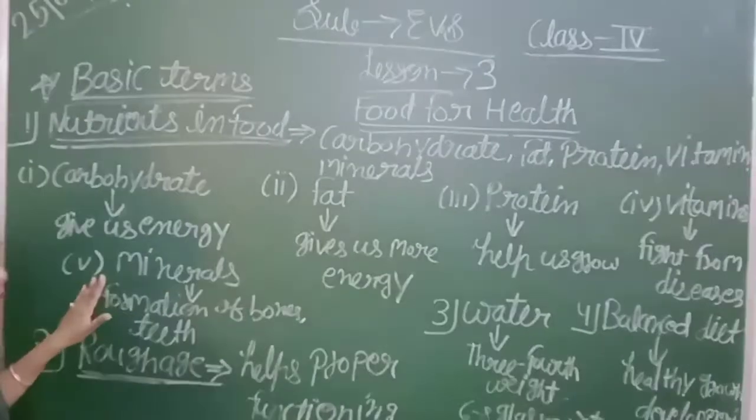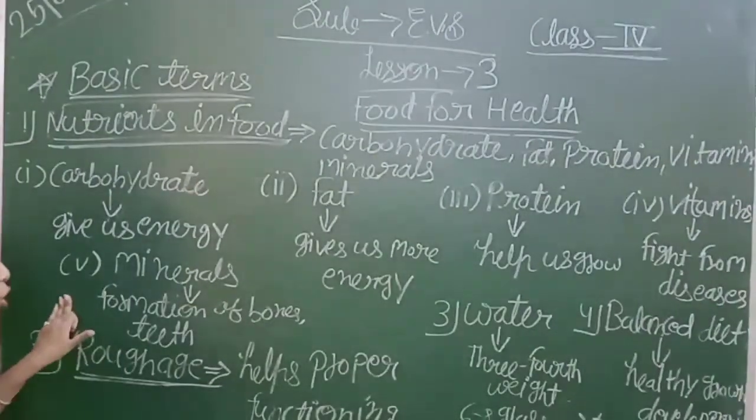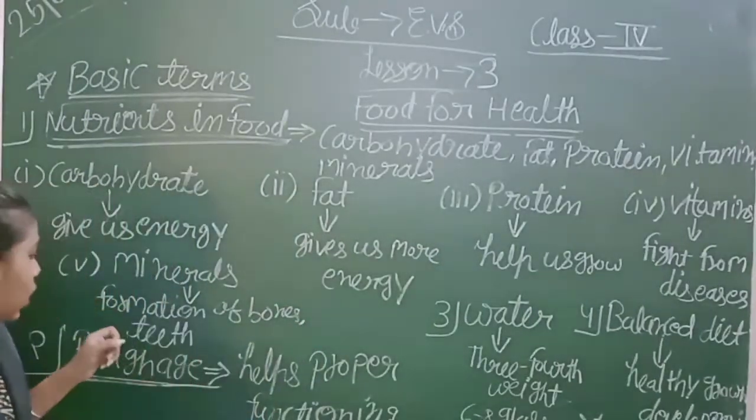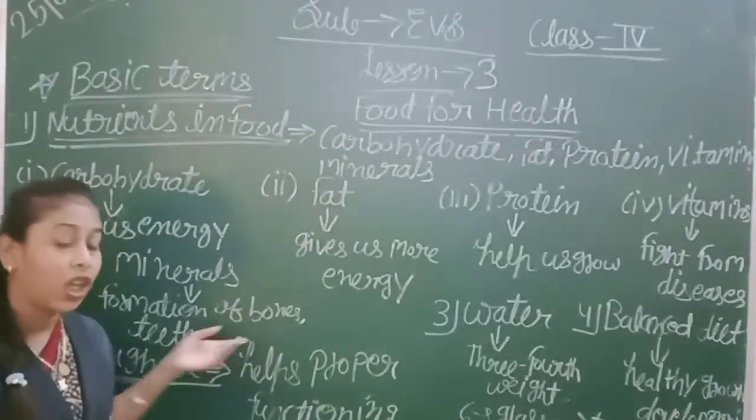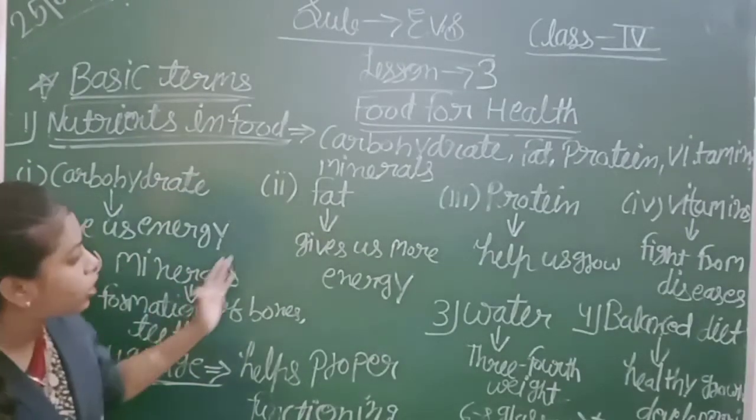Number five is minerals. Minerals include calcium and iron. These make our body strong and healthy. These are our nutrients.